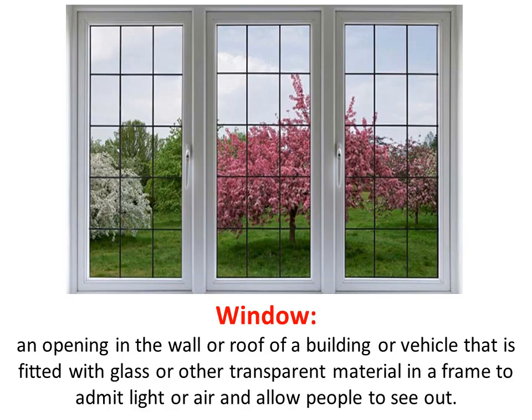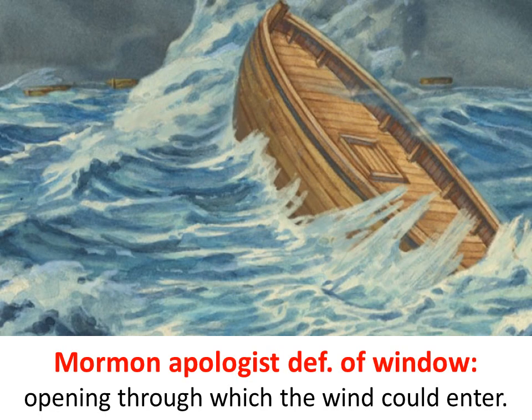The term 'window' is mentioned in the Book of Mormon. It is an opening in the wall or roof of a building fitted with glass or other transparent material to admit light or air — they didn't have glass back then. But since 'window' is an anachronism in the Book of Mormon, the apologists have redefined it and simply said it is just an opening through which the wind could enter — no glass, no traditional window, just kind of a crack in the boat. These are the boats the Jaredites supposedly came across on.